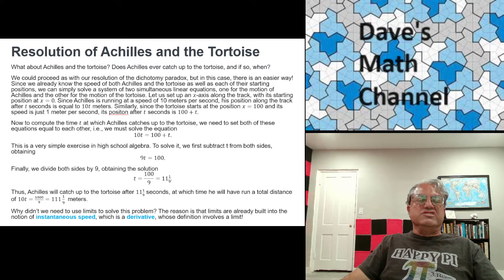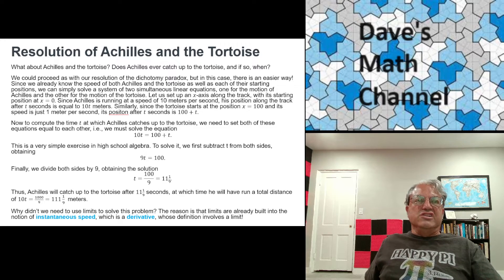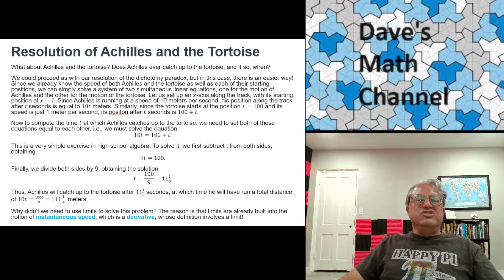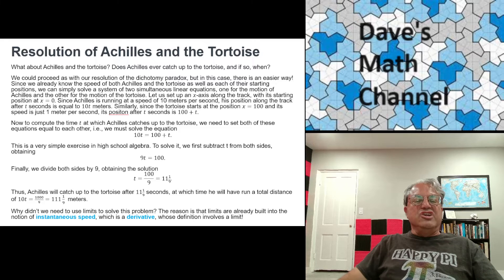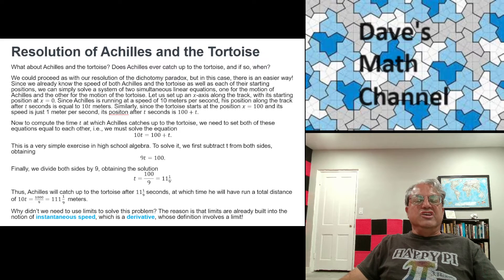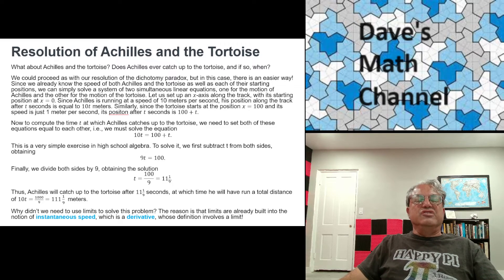We just get linear equations for the position of Achilles and the position of the tortoise as functions of time. So let's say Achilles, I said Achilles was running at 10 meters per second. Let's set up a coordinate system in which he starts at position zero, x equals zero. So we're setting up an x-axis along the direction that Achilles and the tortoise are moving. And Achilles starts at x equals zero. The tortoise starts at x equals 100. X is in meters. And like I said, Achilles is running 10 meters per second. So we can write Achilles' equation of motion as 10t. After t seconds, his position is exactly 10t meters from the starting point. That's pretty easy to see.